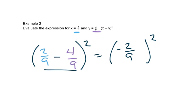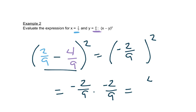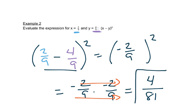So now we have negative two ninths squared. Remember that means negative two ninths times negative two ninths. We multiply across: negative two times negative two is four, and nine times nine is eighty-one. A negative times a negative gives a positive, so we get four over eighty-one.